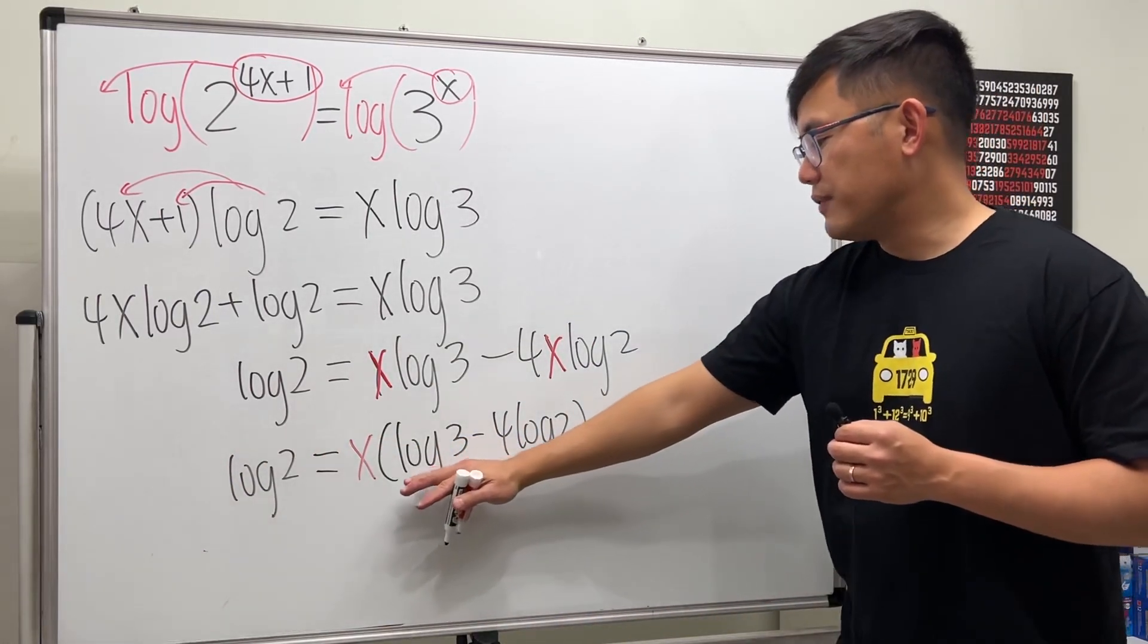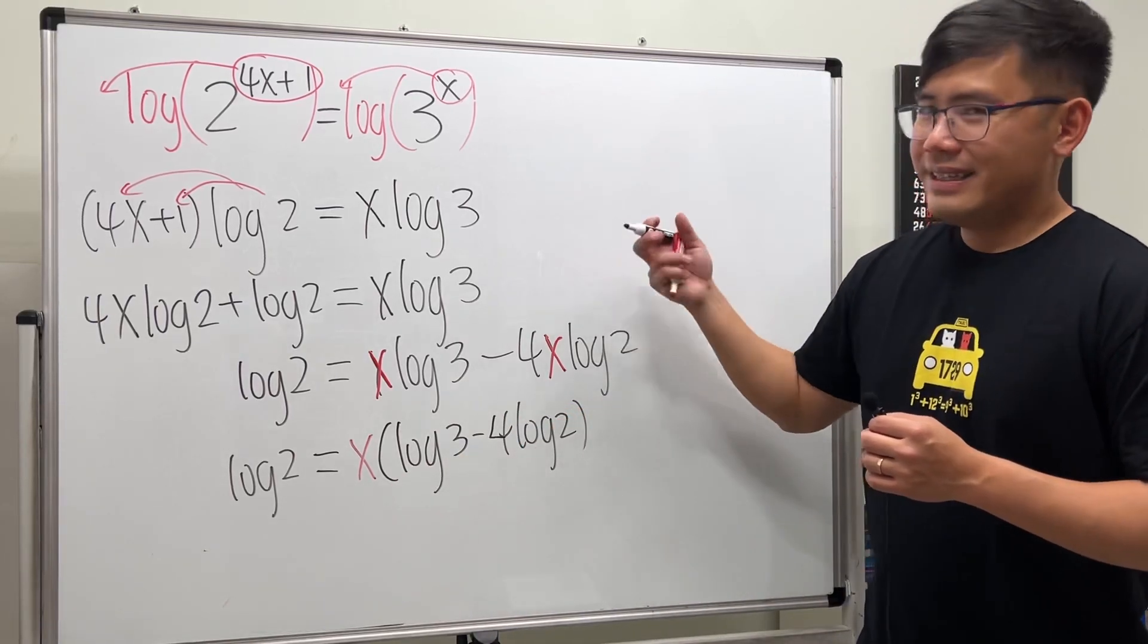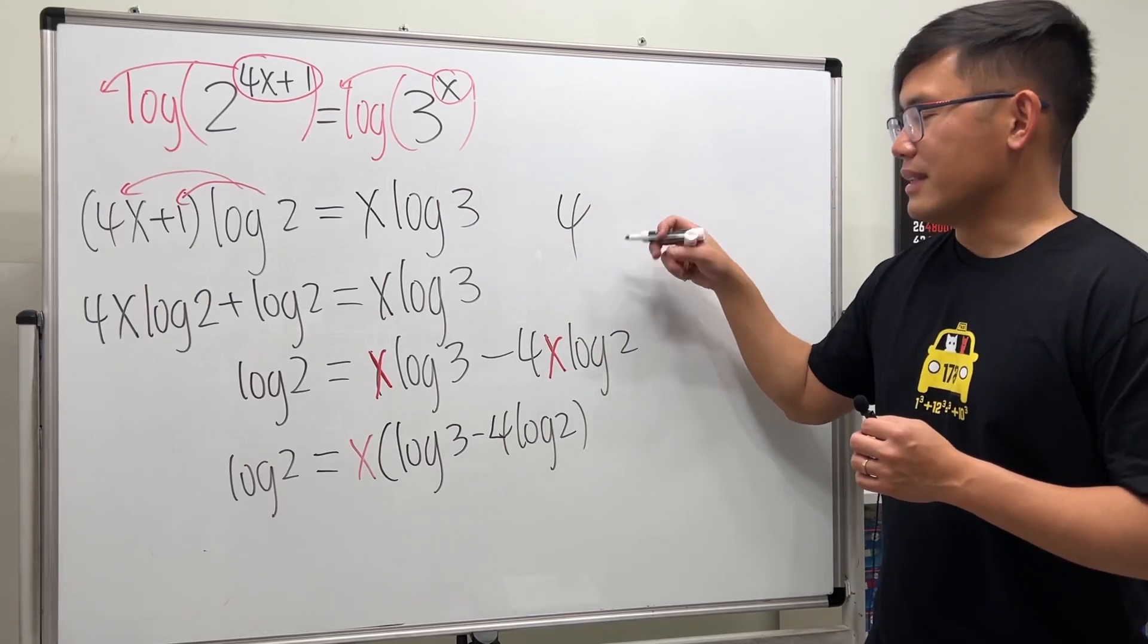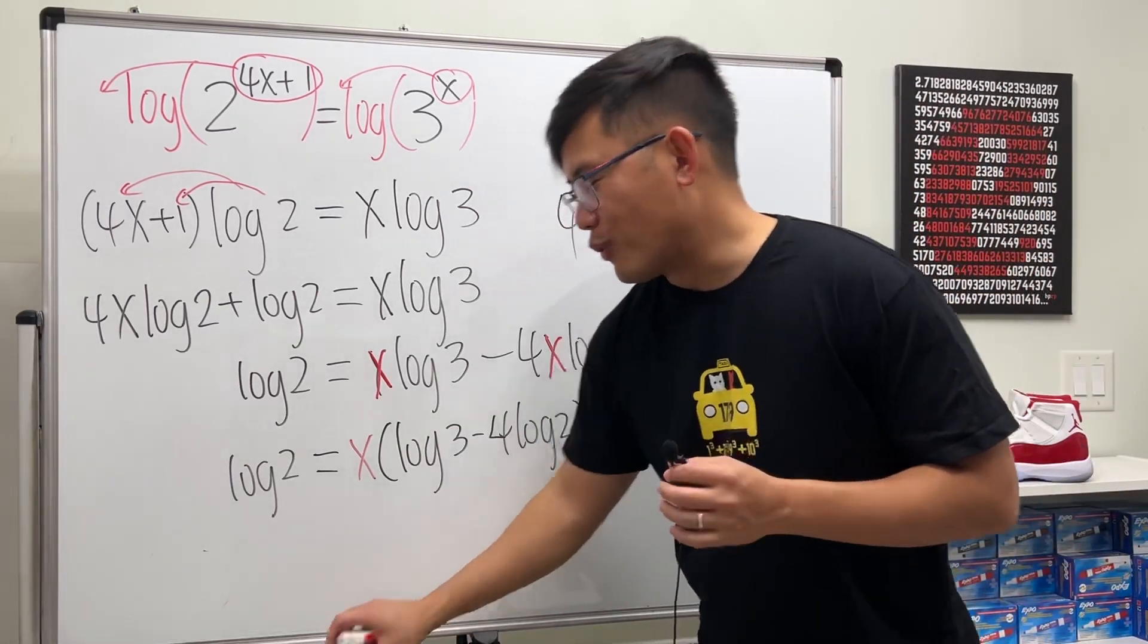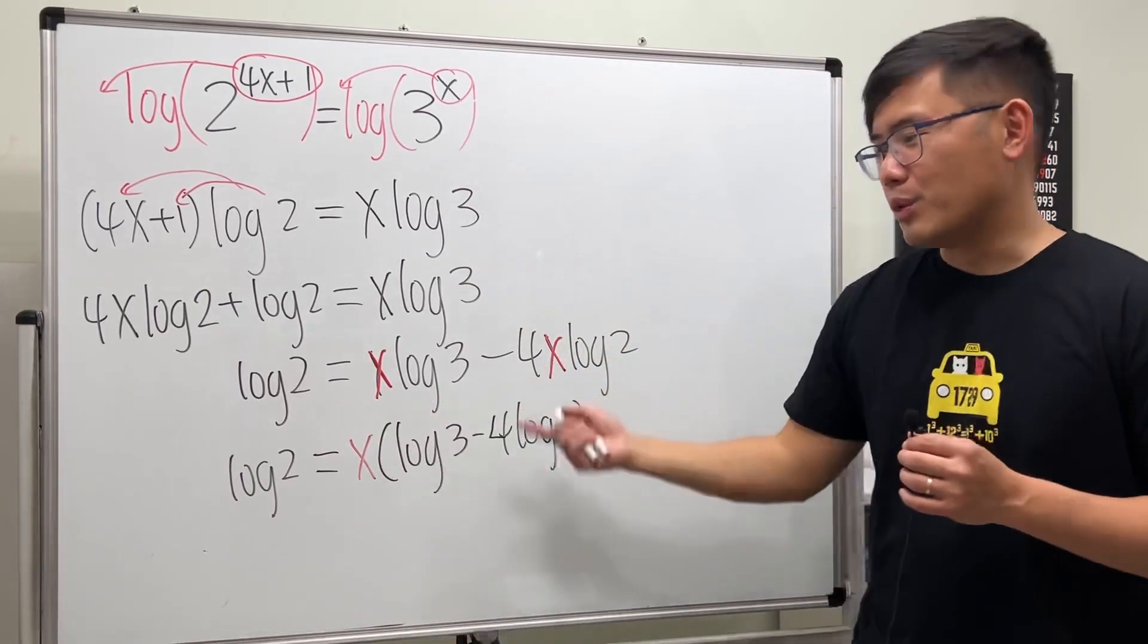In the end, we can just divide this quantity on both sides. Some people told me that my 4 looks like psi or phi, the Greek letter. But I will try to write my 4 better anyway though. All we have to do is just divide this on both sides and we'll be done.